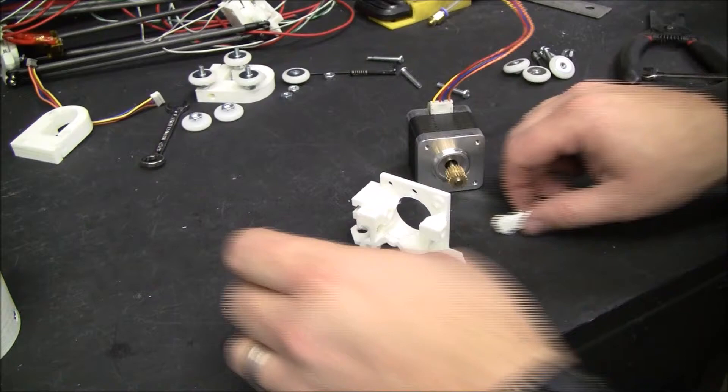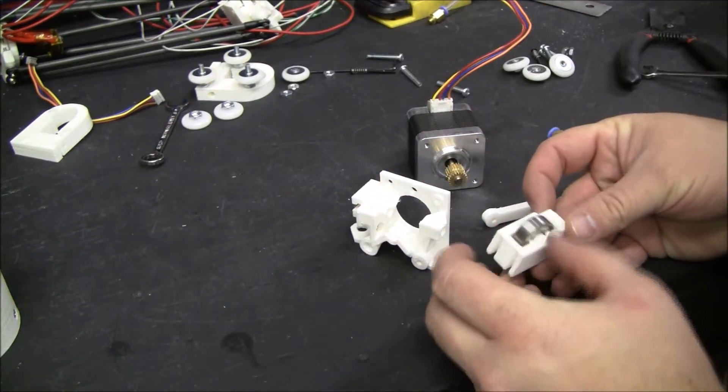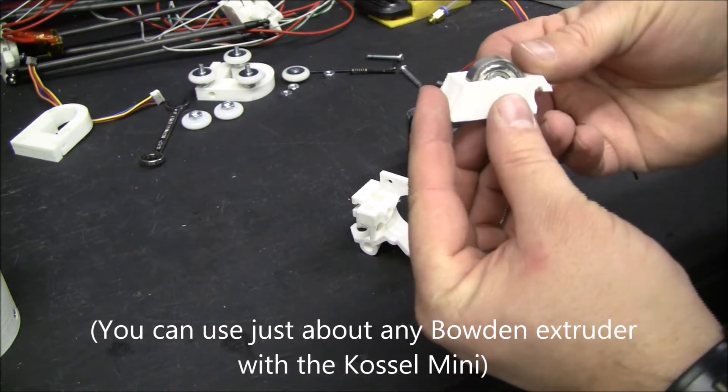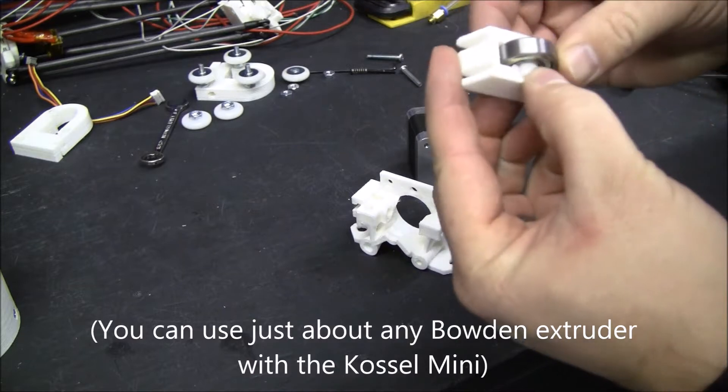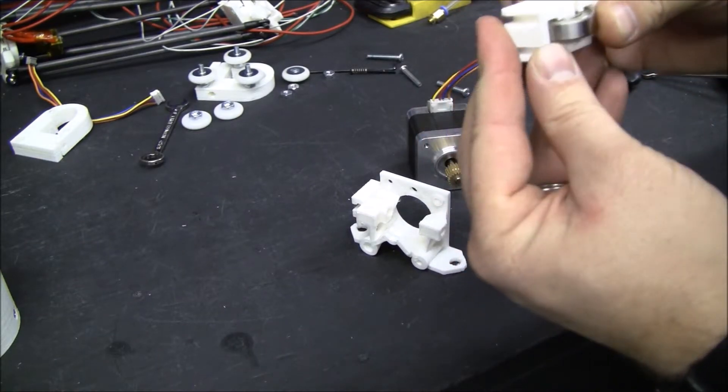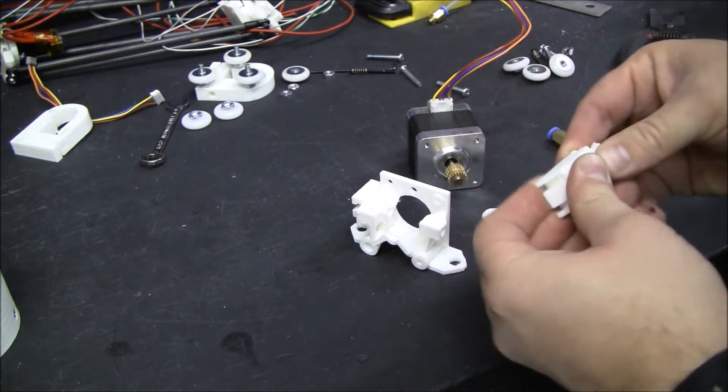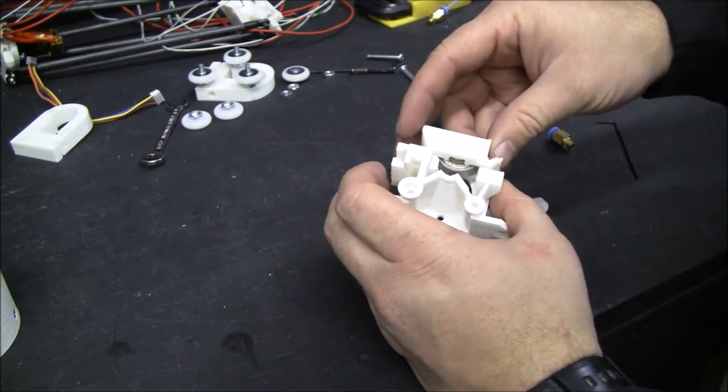So this is Eric Clipper's extruder, Bowden extruder. There's a plastic stud in there holding this one in. It's gonna go like that.